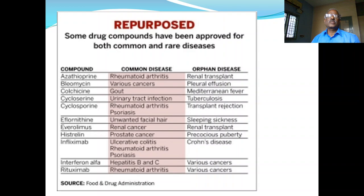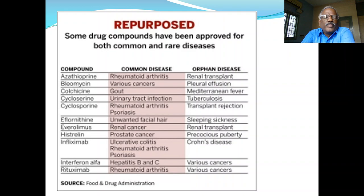Some other examples: azathioprine is used for rheumatoid arthritis and now also for organ rejection in renal transplantation. Colchicine was originally developed for gout and is now used for the treatment of fever. So many examples of drug repurposing exist.